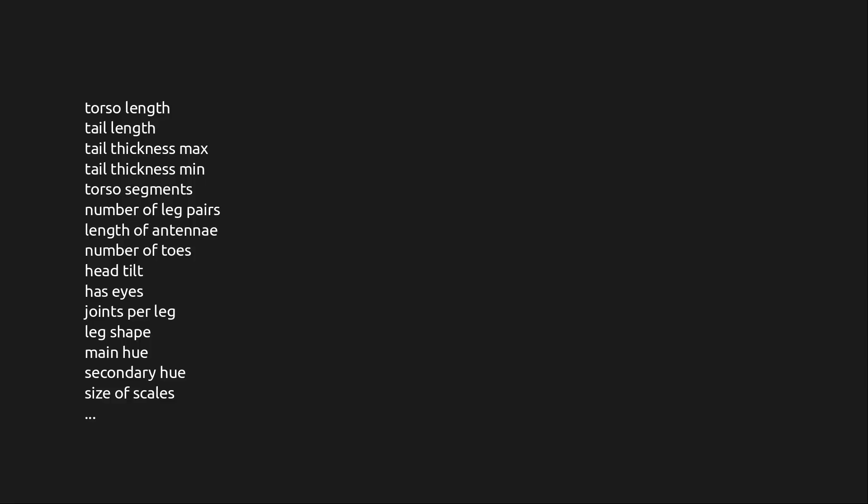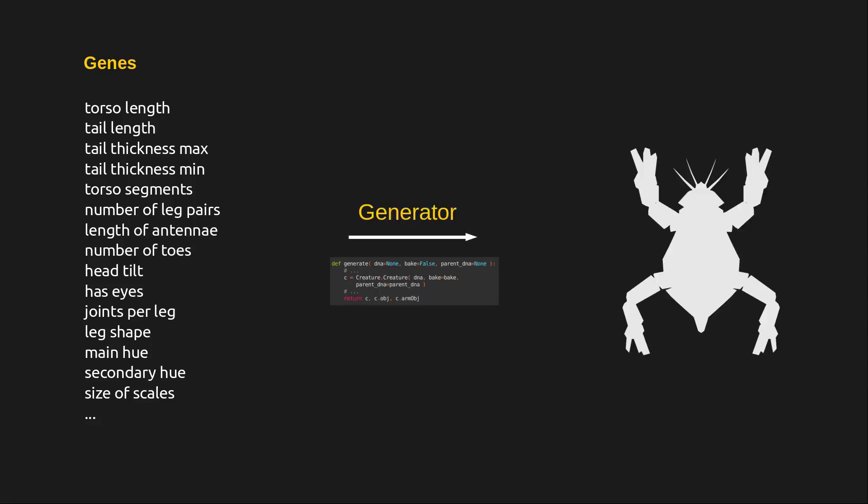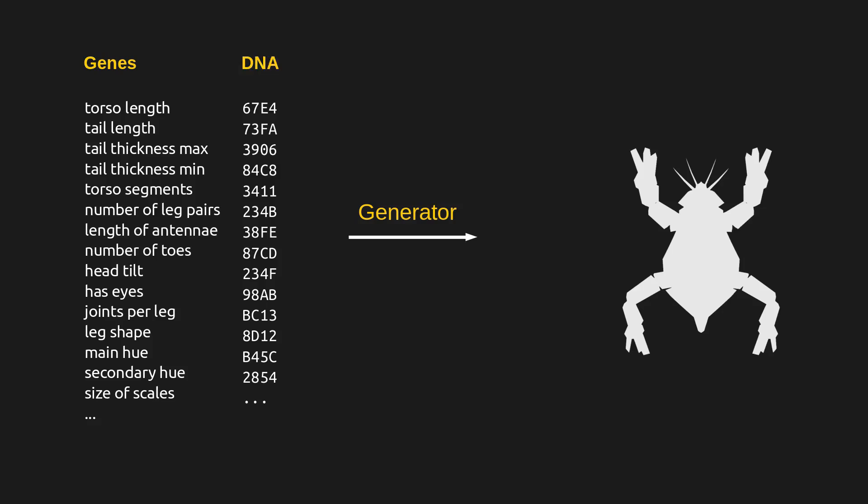Let's take a list of properties and call them genes. Then we'll write a program which takes these and turns them into a mesh, textures and animation skeleton. To create a single creature, we need to choose values for each of these genes. Let's call these the creature's DNA. Each of these values can range from 0 to FFFF, and in order to use them we need to first map them to a sensible range. For some genes, I simply do this by mapping to a fixed range.